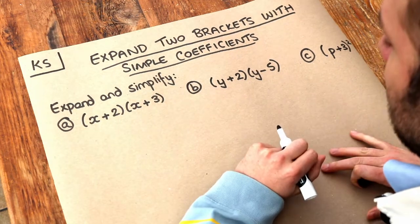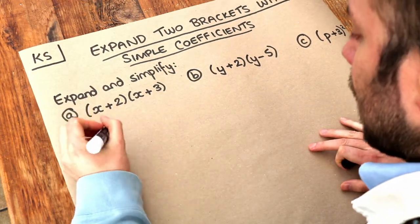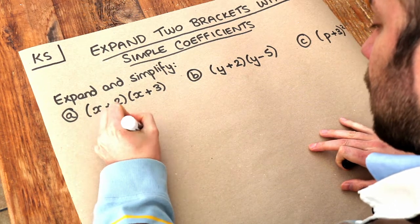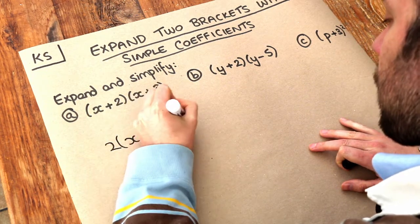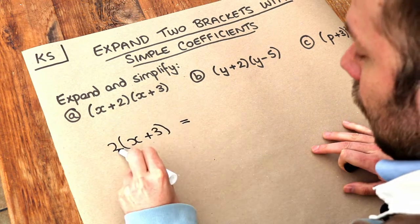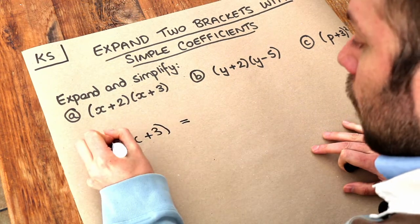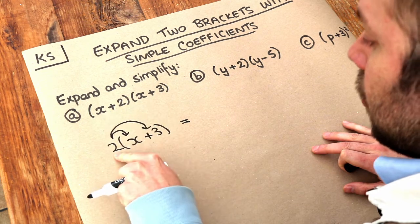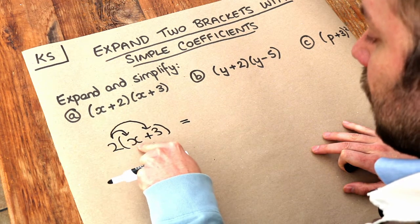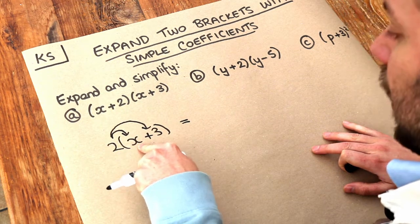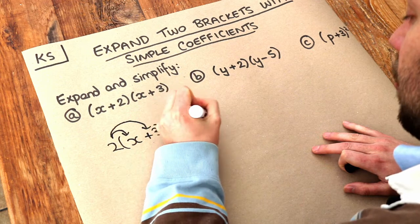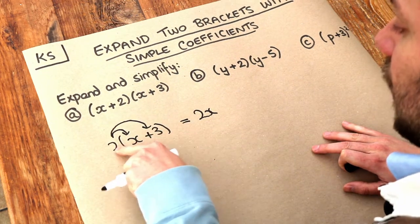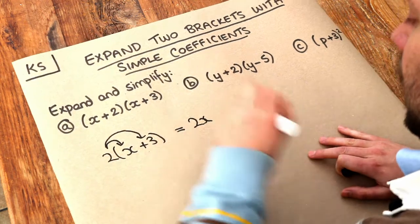Let's remind ourselves how we expand a single bracket. If I had, say, 2 brackets x plus 3, remember that I do the thing in front of the bracket multiplied by each of the things inside the bracket. So I do the 2 on the front times the first thing in the bracket: 2 times x is 2x. And I do this 2 times the second thing in the bracket: 2 times 3 is 6.